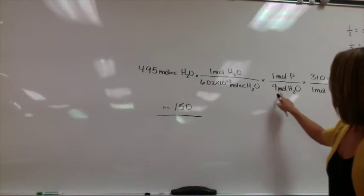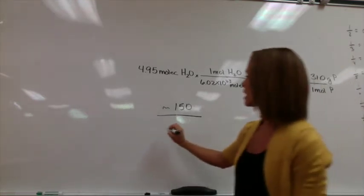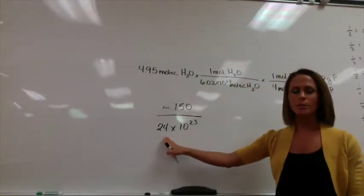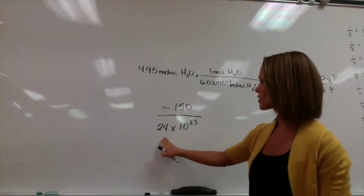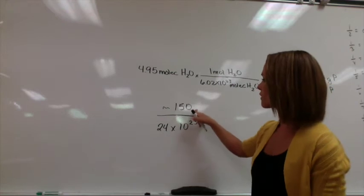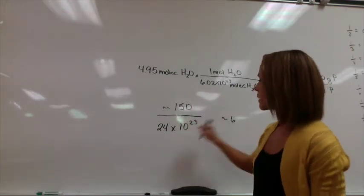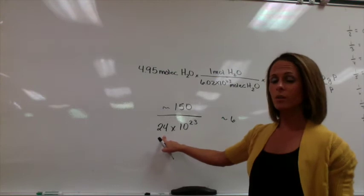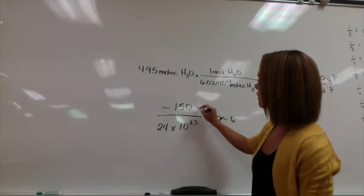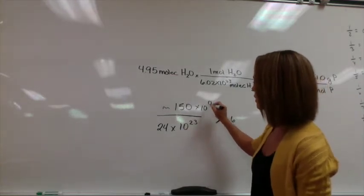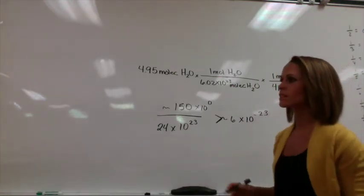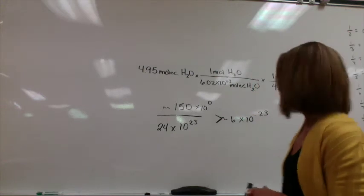I'm going to take 6.02 times 10 to the 23rd and multiply it by 4. I'll simply use 24 times 10 to the 23rd in the denominator. You don't have to have proper scientific notation when doing your own math. I know 24 is like 25 going into 150, which would be approximately 6 times. But I'm using a smaller number in the denominator, so my answer should be a little bit greater than 6. This would be 150 times 10 to the 0, and 0 minus 23 would be times 10 to the negative 23rd. So my answer should be a little bit greater than 6 times 10 to the negative 23rd.